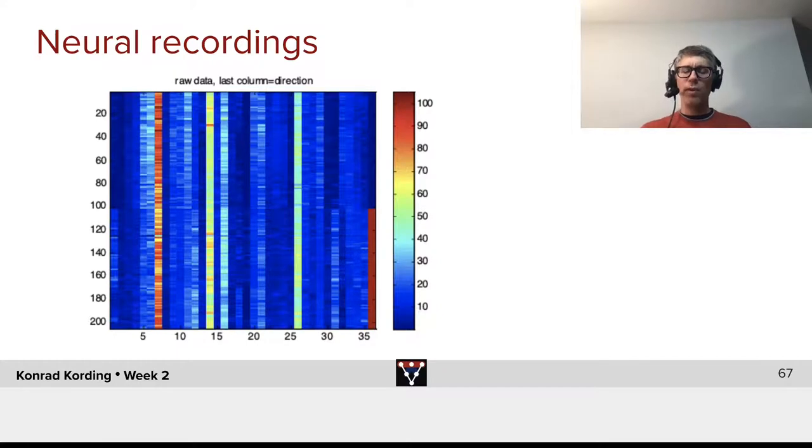We have only movements to the left and only movements to the right. And what you see color-coded is the number of spikes that we get per second from those neurons.